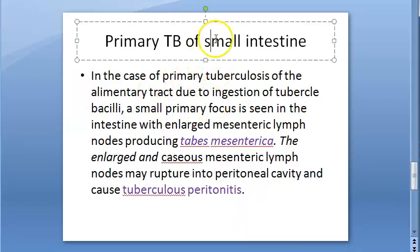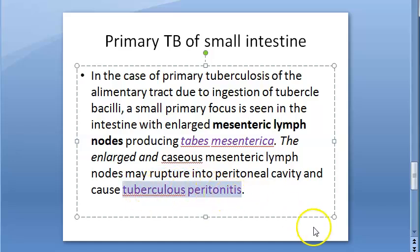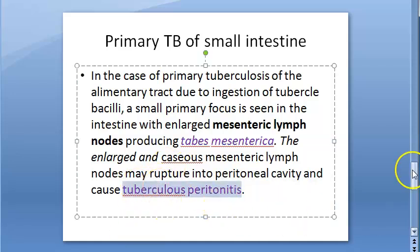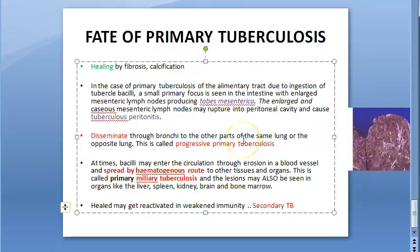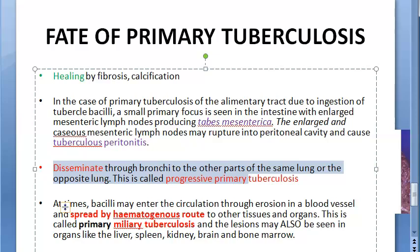If it is the small intestine, then the mesenteric lymph nodes are affected. If the mesenteric lymph nodes are enlarged, it is called tabes mesenterica. These enlarged lymph nodes can rupture and can lead to tuberculosis peritonitis. The fates of primary tuberculosis include: it can heal by fibrosis or calcification; in the small intestine it can lead to tabes mesenterica with possible rupture causing tuberculosis peritonitis; and in the lung it can spread from one lung to the other — called progressive primary tuberculosis, seen in immunocompromised people like AIDS patients, through dissemination via bronchi.